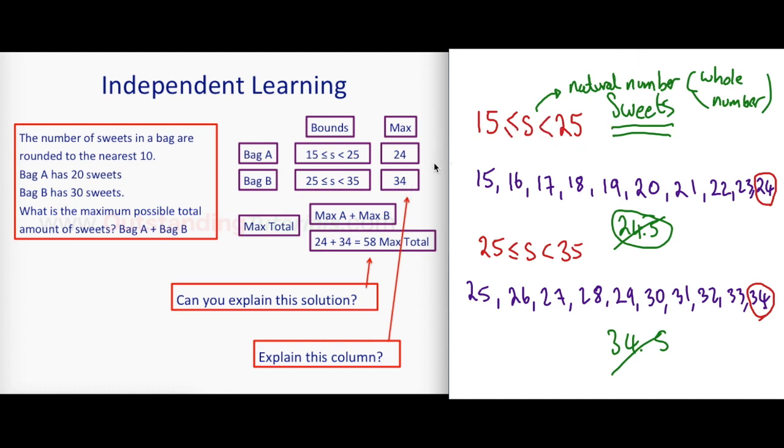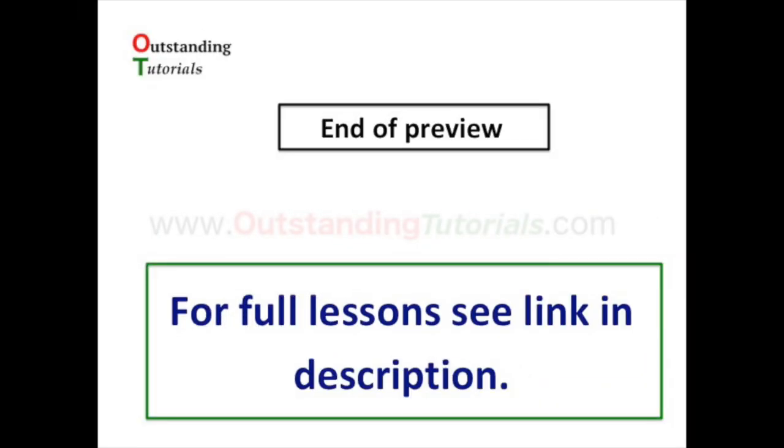Then the total sweets is going to be an addition. How many sweets are in bag A? How many sweets are in bag B? And you want to know the total sweets in bag A and bag B. It's going to be total sweets in bag A plus the total sweets in bag B. Maximum total is bag A plus bag B, which is the maximum bag A is 24, maximum bag B is 34, and you add them up you get 58. That's the maximum total sweets that could be here because these numbers have been rounded.